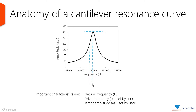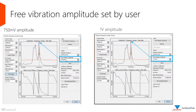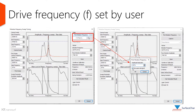Here we can see a resonance peak of a cantilever. The resonance, or natural frequency, is that at which the cantilever exhibits the highest oscillation amplitude. The drive frequency and amplitude are set by the user, and the excitation circuit attempts to reach the set parameters. An example of setting free amplitude in Nanosurf software is shown: the amplitude was set to 750 mV on the left and 1 V on the right. The excitation amplitude on the right went up to reach the desired free amplitude. The further the drive frequency is from the resonance peak, the more drive amplitude will be required.